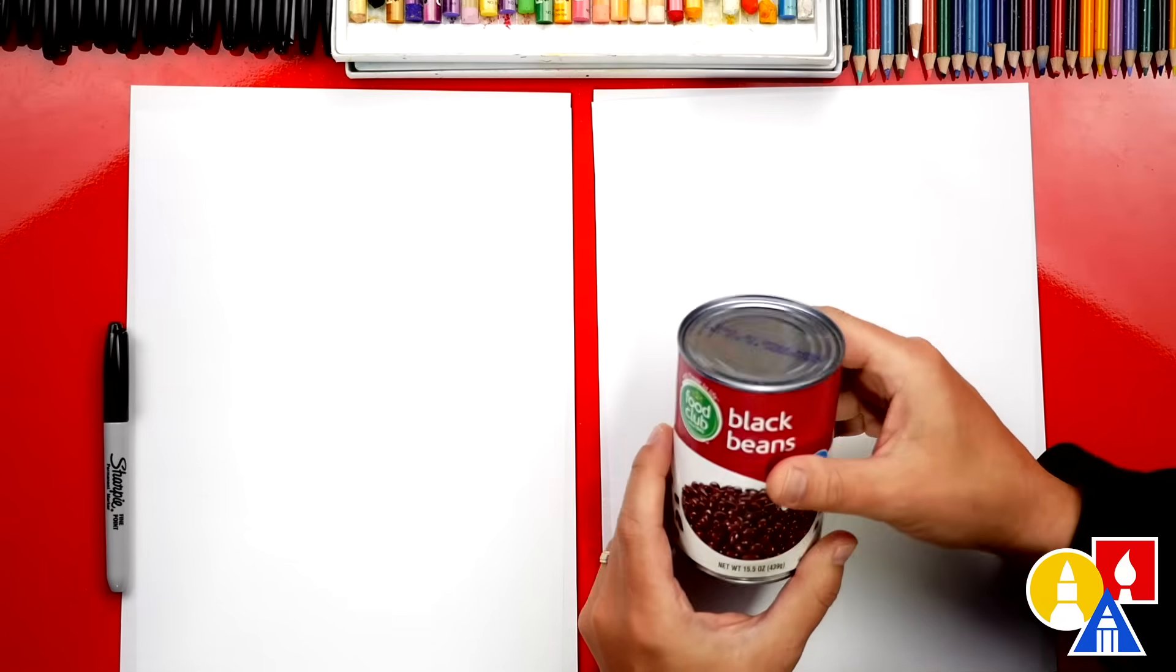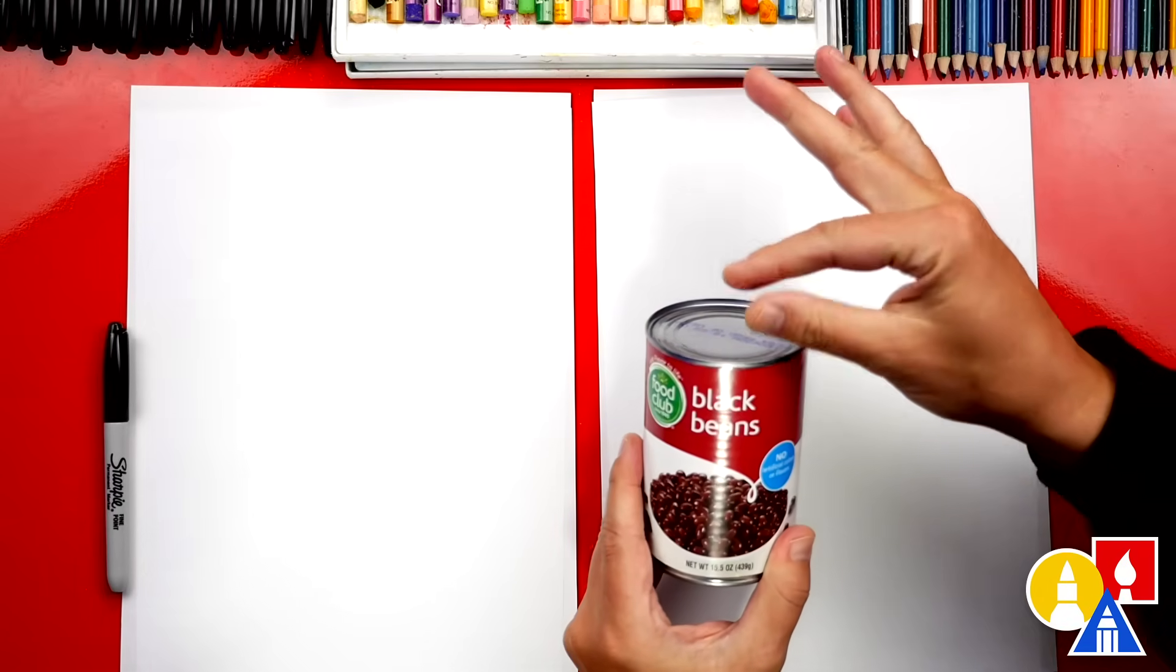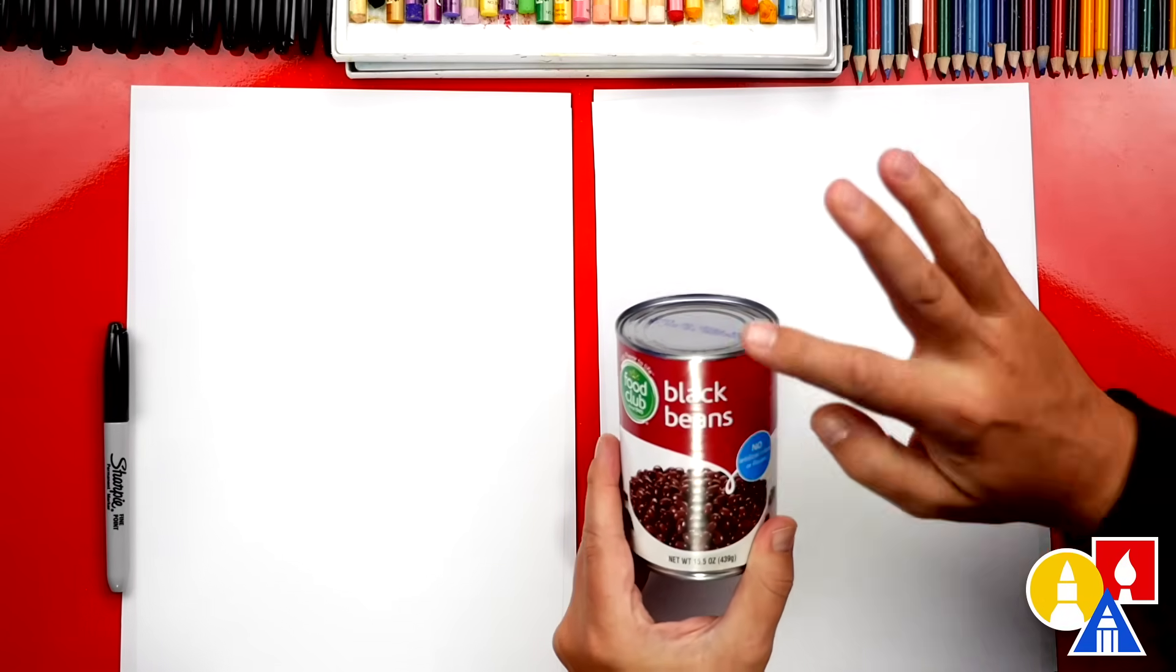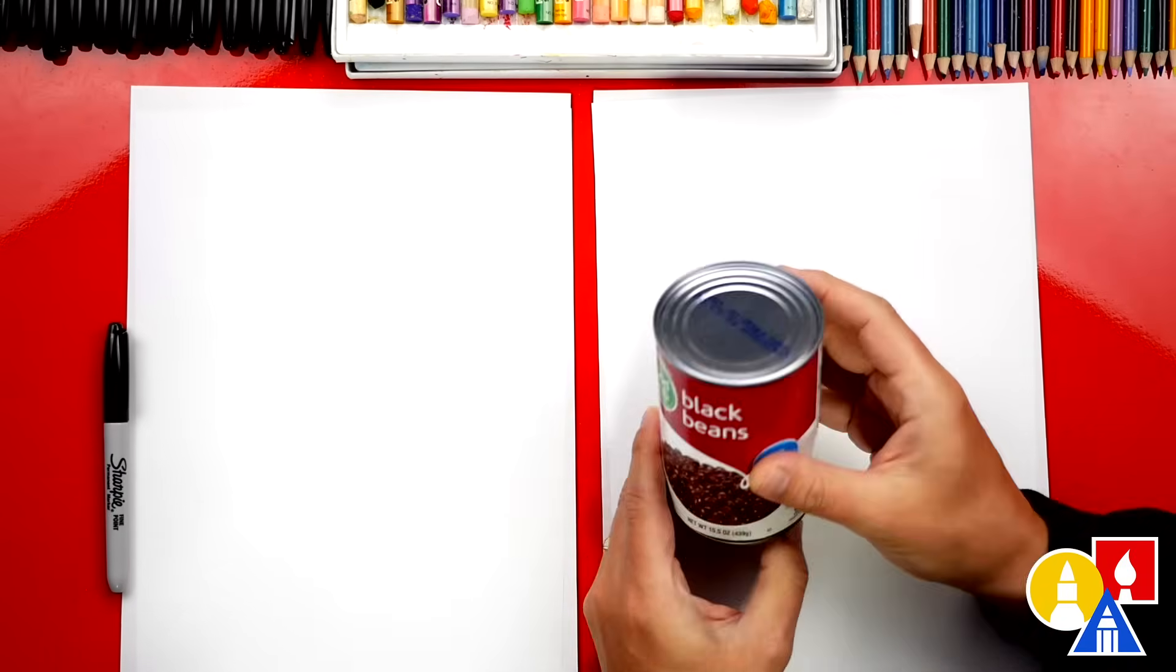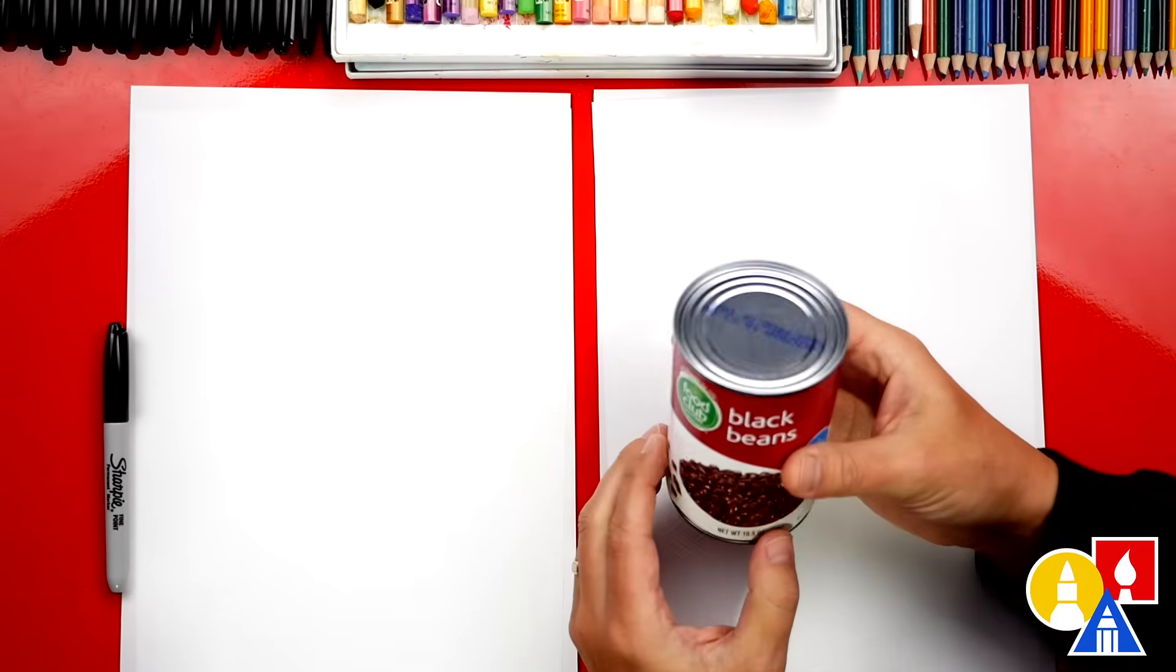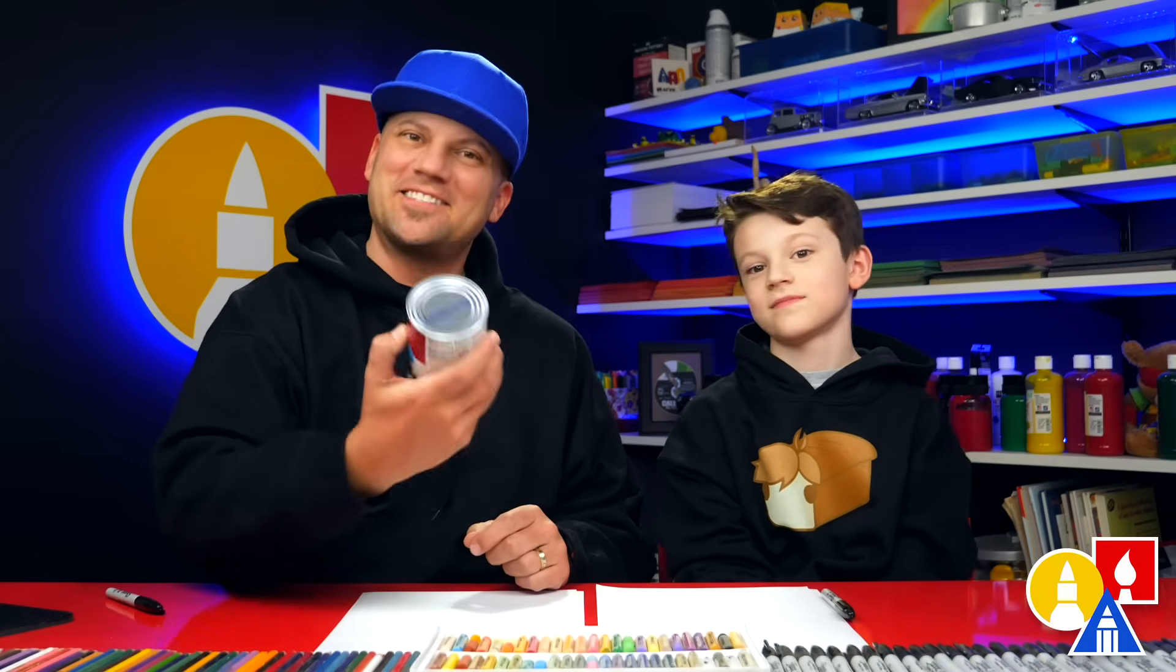But because when you turn it like this, look, the circle kind of squishes like an oval. But then we have the top or the how tall it is and that turns it into a cylinder. So you can remember that a can of beans is what form? A cylinder. Yeah, a cylinder. All right, let's draw a cylinder.